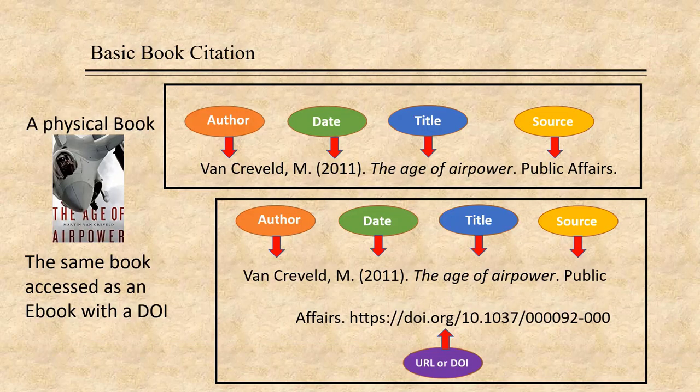A basic book citation is easy. Your building blocks are in the same order as those for the article citation: author, date, title, source. Remember to put the book title in italics. And if the book is an e-book, add the URL or DOI after the publisher's name. The source information for a book is the publisher's name, rather than the journal name.